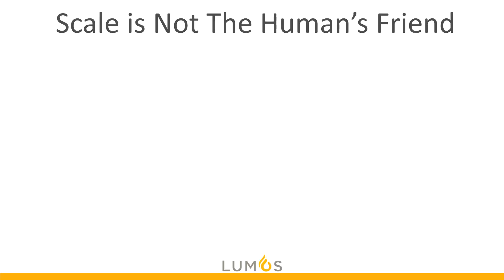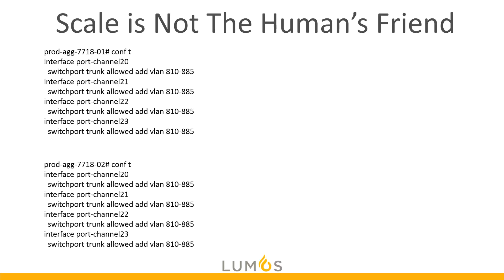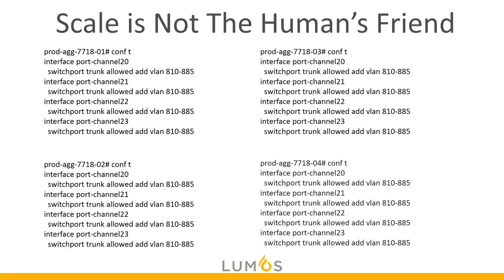The problem is that scale is not the human's friend. We have four different port channels to add this to on that one 7718 switch, and we don't just have one aggregation switch — we have at least two, probably three or four depending on the size of our organization. We make mistakes. Also, who really wants to do those kind of menial tasks?